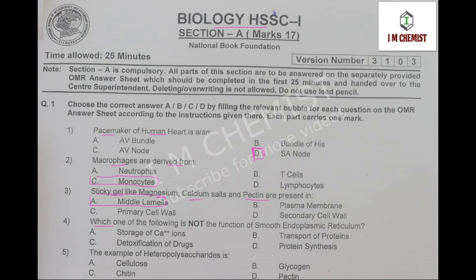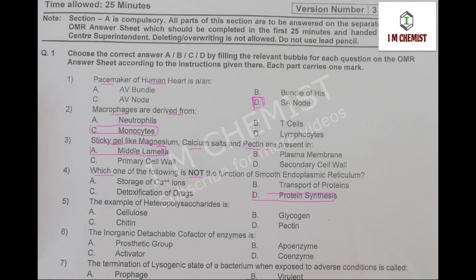Which one of the following is not the function of smooth endoplasmic reticulum? The right option is protein synthesis, that is option number D — it is not the function of SER. The example of heteropolysaccharide is actin, and that MCQ is present at page number 49 of your book. The right option is actin.